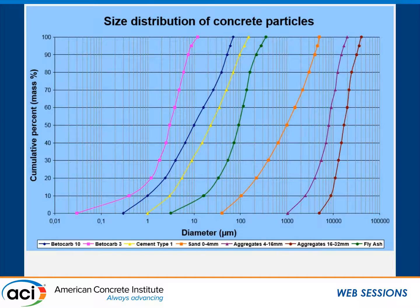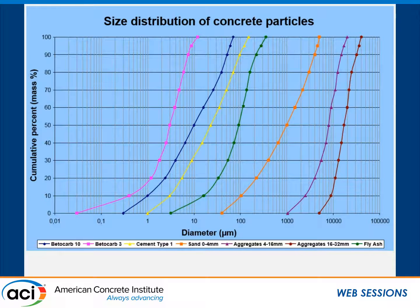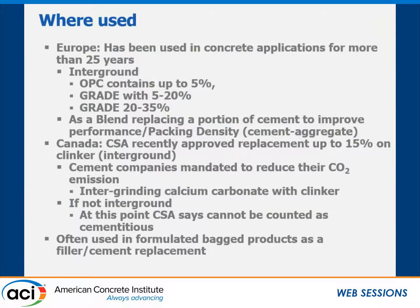These products come in different grinds and sizes — D50 values like 10 microns or 3 microns — depending on the time and length of the grinding process. We can optimize compaction for both the cement base and the aggregate base. The idea when using these different products is to optimize packing density.